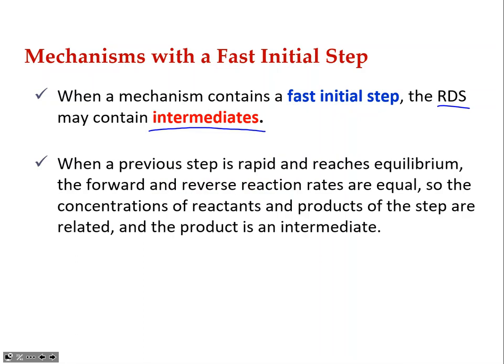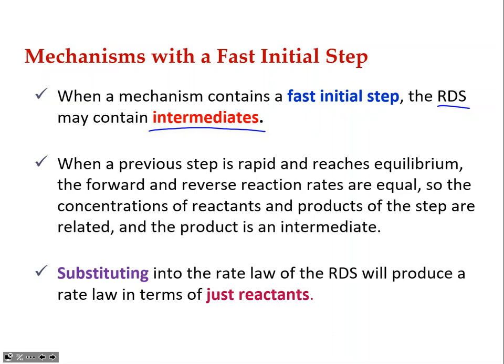Having intermediates in the rate-determining step is a problem because you can't use them in the rate law. The previous step is rapid and reaches equilibrium — the forward and reverse reaction rates are equal — so the concentrations of reactants and products of that step are related. The product of that fast step is an intermediate, and we'll analyze the fast equilibrium step to do some substituting.